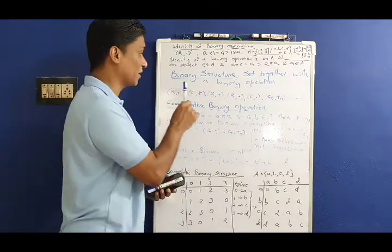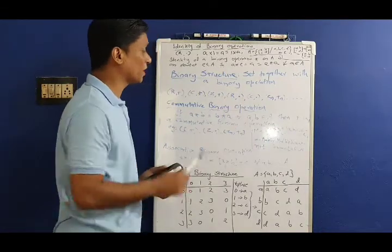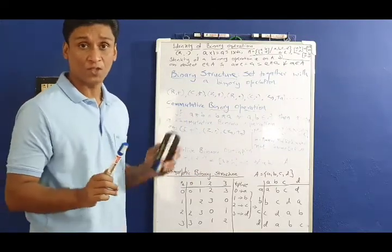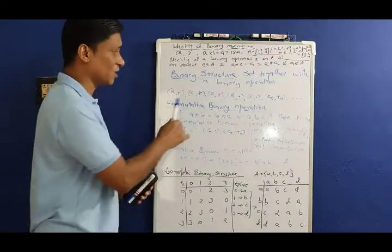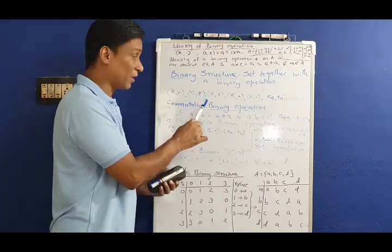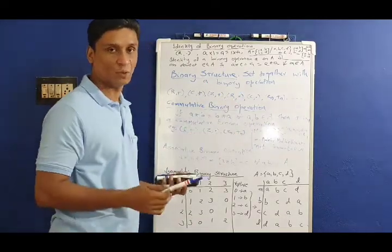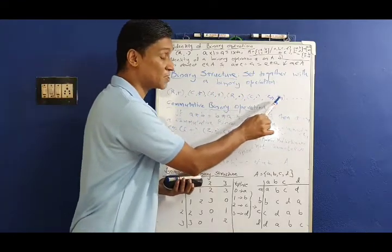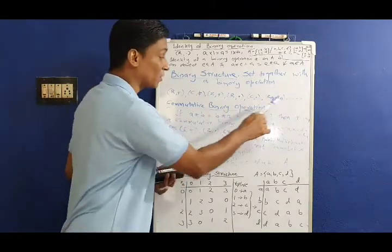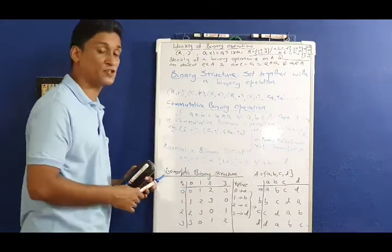A binary structure is a set together with a binary operation. We will discuss examples: R under addition, R under dot, Zn under addition modulo n. These are all binary structures.